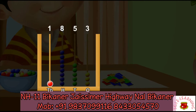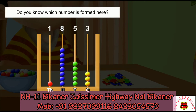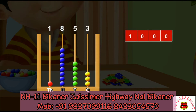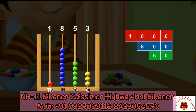Do you know which number is formed here? One red bead in the thousands spike represents one thousand. Eight beads in the hundreds spike represent eight hundred. Five beads in the tens spike represent fifty.